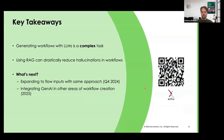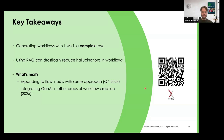In terms of key takeaways: generating workflows is not a trivial task — it's very specific to ServiceNow and enterprise use cases. But using Retrieval Augmented Generation, we're able to increase performance and, most importantly, reduce hallucinations when generating workflows. Next steps include expanding to inputs throughout the flow, going out in Q4 2024, and increasing Gen AI throughout the product — not only generating workflows but also updating them and helping users work more efficiently. If you're interested in the paper, you can scan the QR code. Thanks everyone for listening.